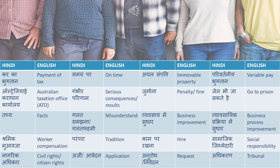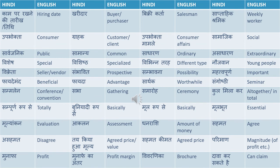Arzi ya avedan means application. Anurodh ya nivedan means request. Adhikaran means tribunal — tribunal is like a small court which is very common in Australia. So if you get the word tribunal it means adhikaran. The next word is kaam par rakhne ki tarikh ya tithi — that is hiring date. Kharidaar means buyer or purchaser. Vikri karta means salesman.